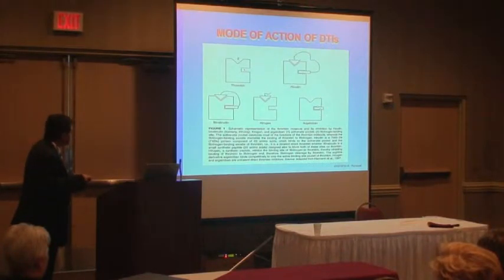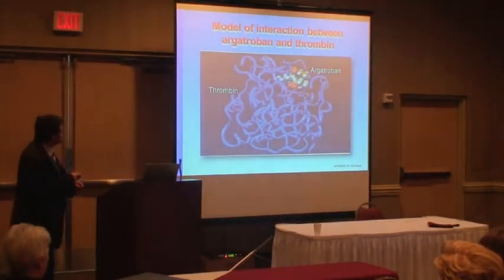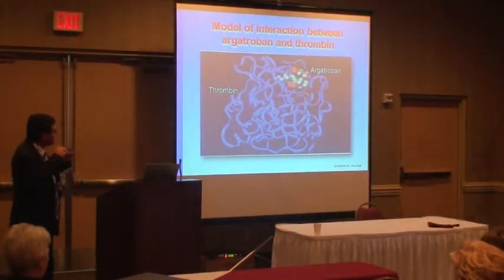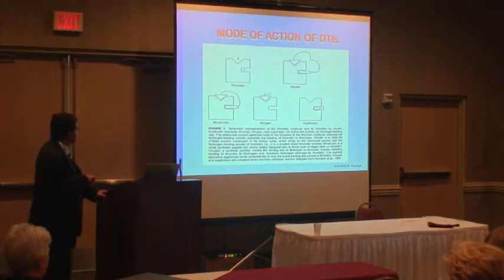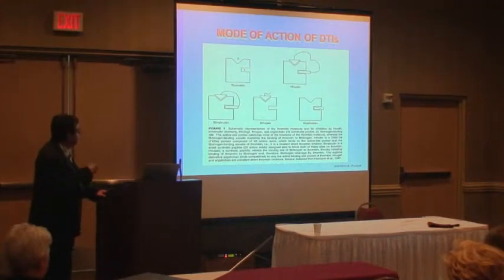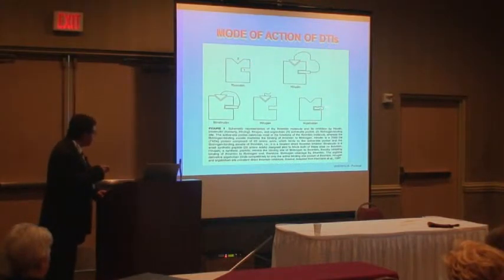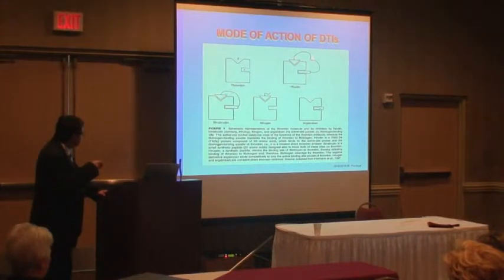Argatroban binds to thrombin and blocks its activity. To correct a previous statement: here is the active site, and here is the fibrinogen binding domain. Argatroban only blocks the active site, hirugen only the fibrinogen binding site, while bivalirudin and hirudin block both sites.